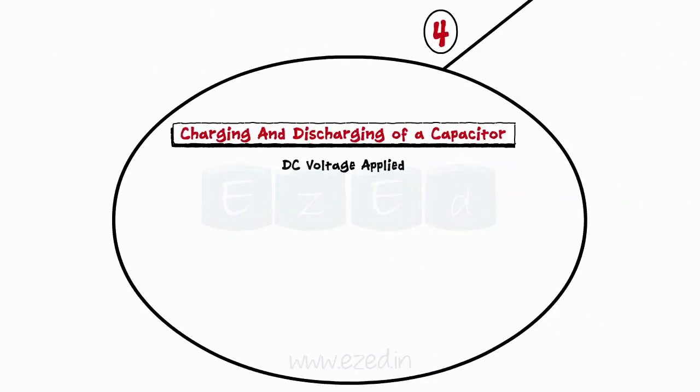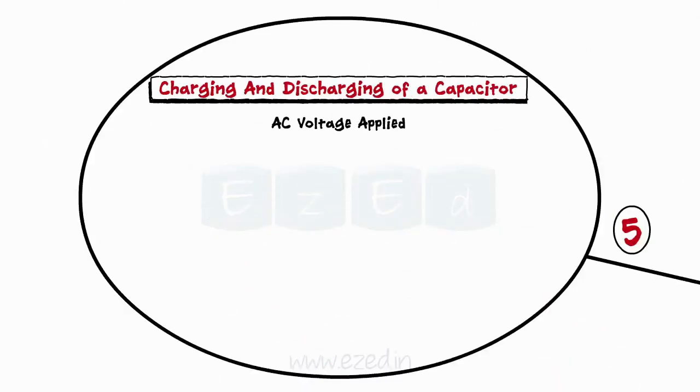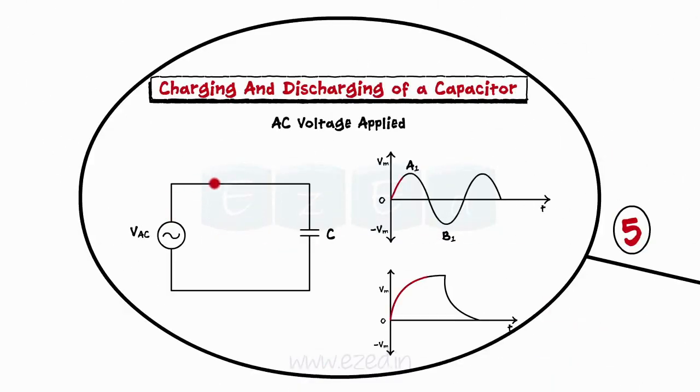The last concept was charging and discharging of a capacitor. For DC supply, it charges till the capacitor voltage equals applied voltage and then it discharges by supplying the voltage to the bulb. For AC supply, the capacitor charges till the peak positive value and discharges till the peak negative value.